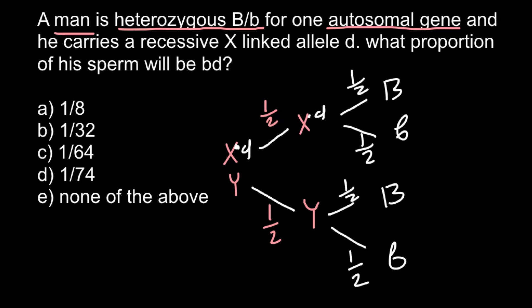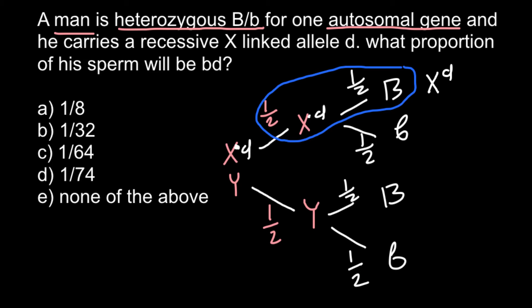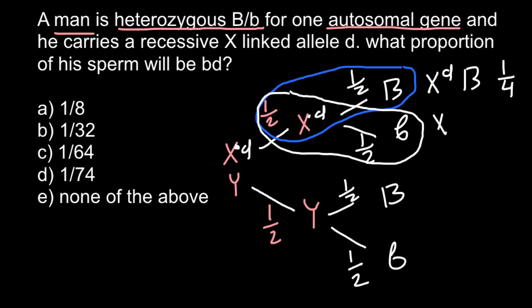You can express one half as 0.50 or 50% — it doesn't affect our calculations. In order to find the probability of a given genotype, we multiply the probability of the sperm containing that chromosome by the probability of it carrying that autosomal allele. So we multiply one half by one half. The probability of the sperm with genotype X^d and capital B would be one half multiplied by one half, giving us one quarter. The probability of the genotype X^d and small b also would be one quarter — one half multiplied by one half.